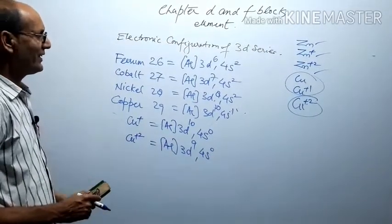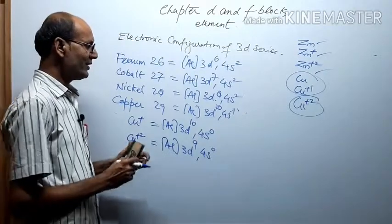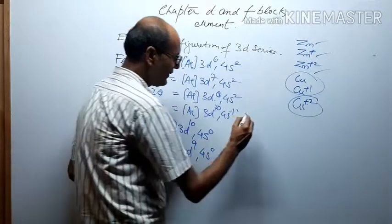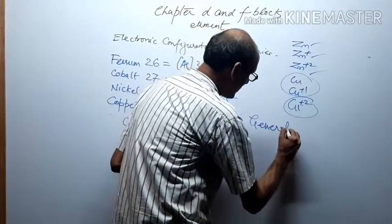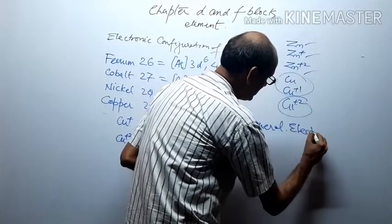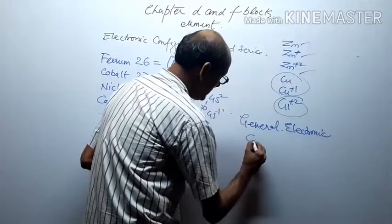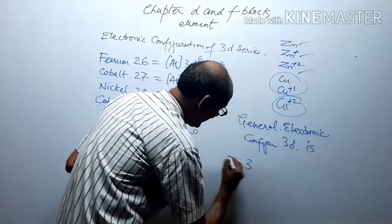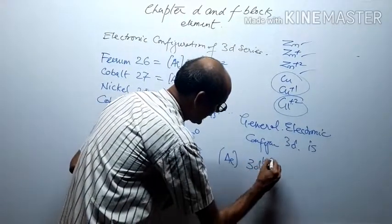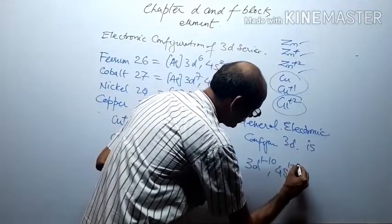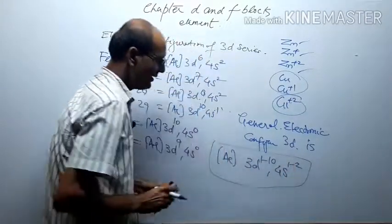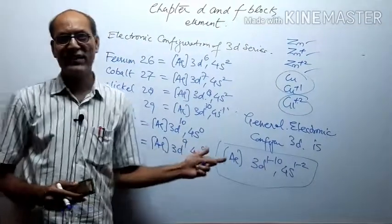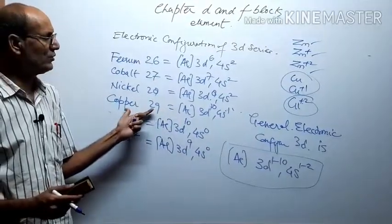What you observe writing the electronic configurations of the 3d series is that all elements have 3d and 4s present. The general electronic configuration of the 3d series is: [Ar] 3d¹⁻¹⁰ 4s¹⁻². Please note this down. Tomorrow we will explain the electronic configurations of the 4d, 5d, and 6d series. The 3d series is enough for today — thank you, good night.